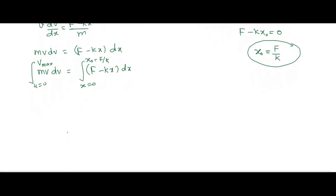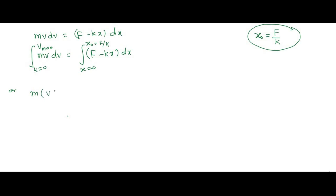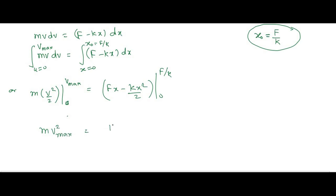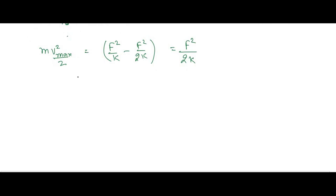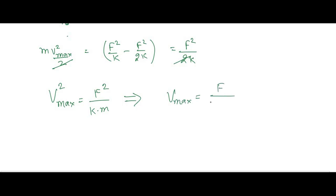Evaluating the integral: [m·v²/2] from 0 to v_max equals [F·x − k·x²/2] from 0 to F/k. This gives m·v²_max/2 = F²/2k. Cancelling the factor of 2 from both sides, we get v_max = F / √(mk). This is the maximum velocity the block will have.